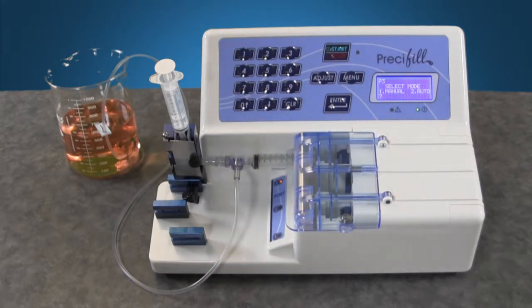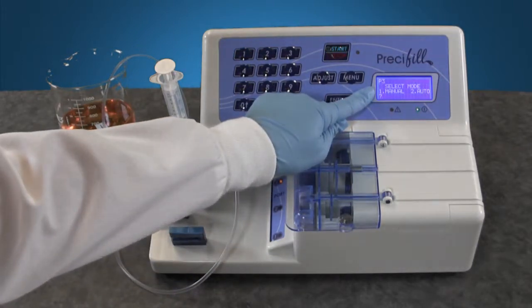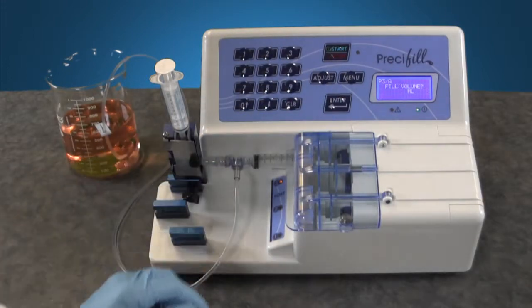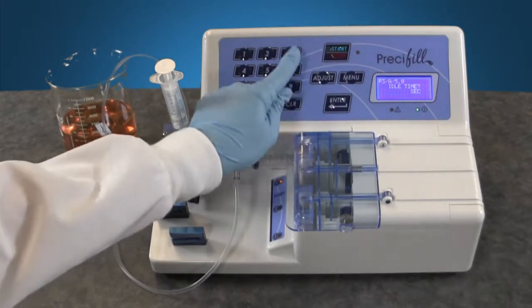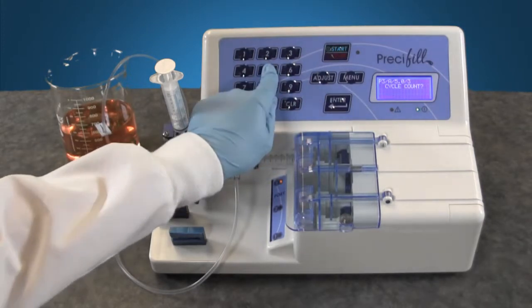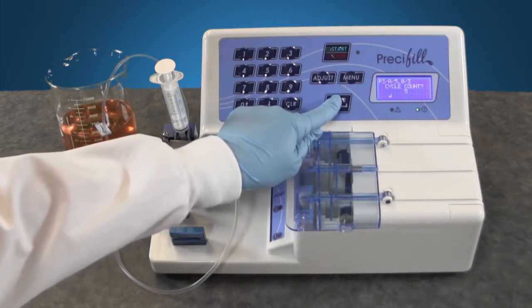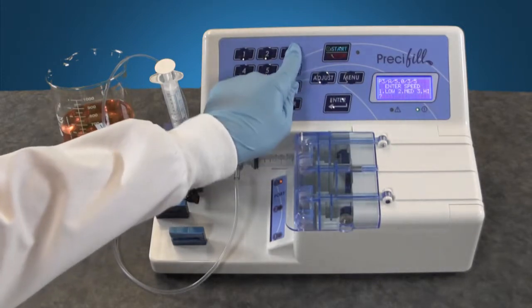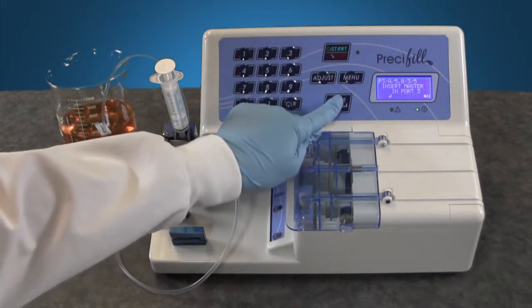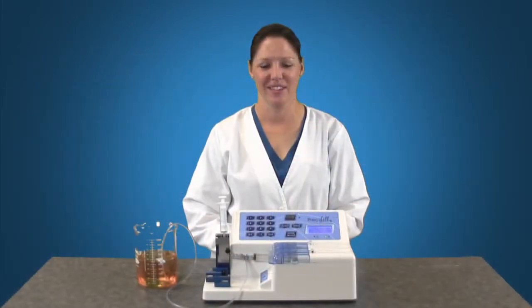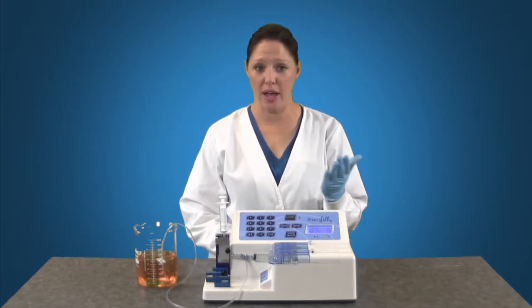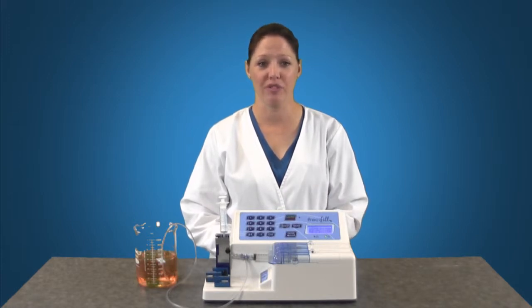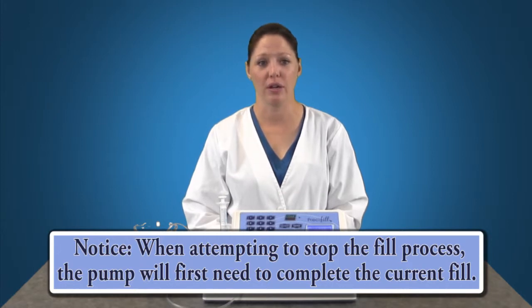To fill in automatic mode simply select automatic from the select mode screen. Press 2 and enter. Enter your fill volume 5 mil and enter. Idle time between fills 3 seconds and enter. The cycle count which is the number of total dispensers 5 and enter. And the speed 3 for high and enter. Once ready press the start stop button and the pump will fill the total batch. You can stop the batch at any time by pressing the start stop button and resume filling by pressing it again. It is important to note that in order to stop the fill process the pump needs to complete the current fill.